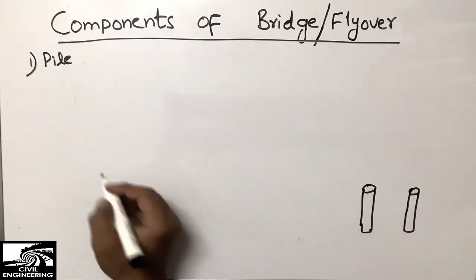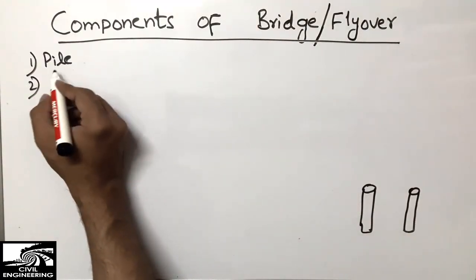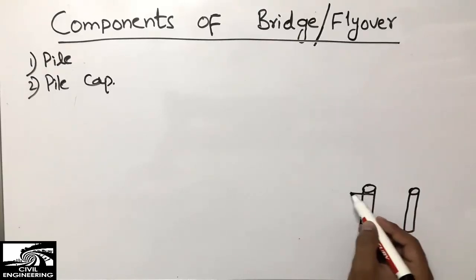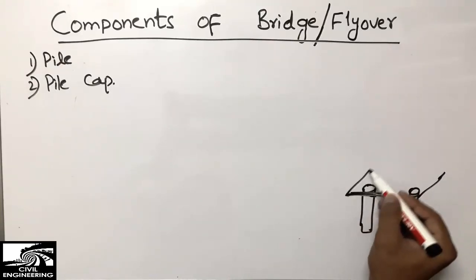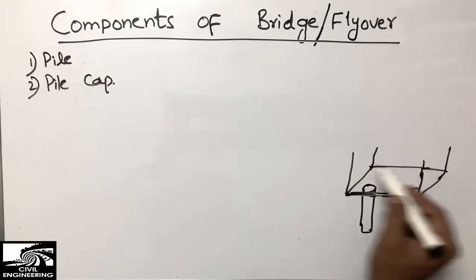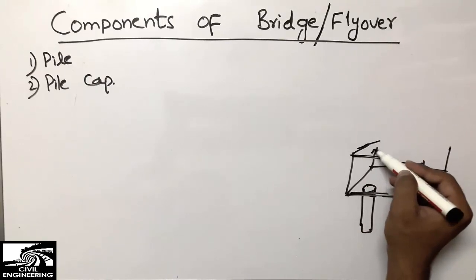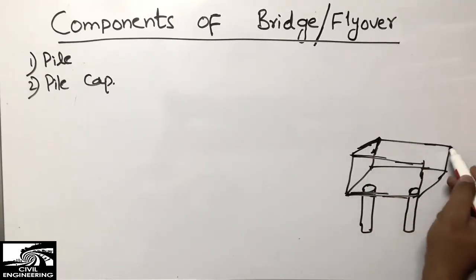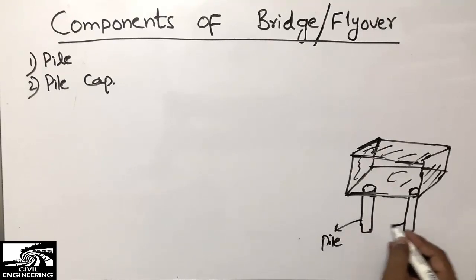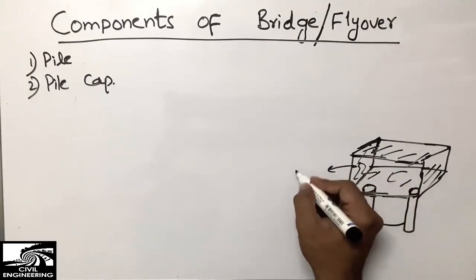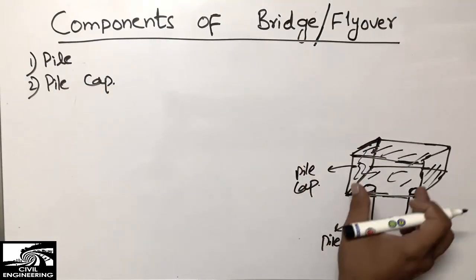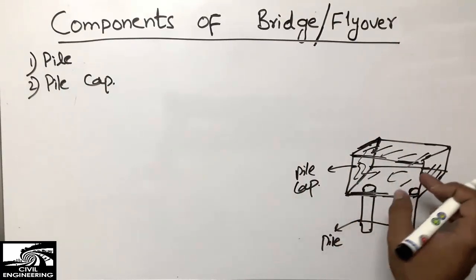After the piles, the second component is the pile cap. It is a concrete cap formed above the pile. This is the pile cap — this one is the pile, this is also a pile, and this is the pile cap above the pile. The pile cap is essentially a box above the pile, and it distributes the load into the different piles.